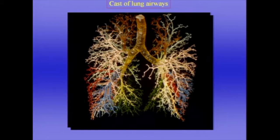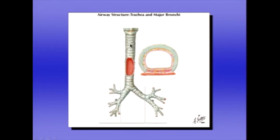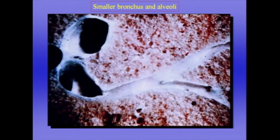Here's the trachea, or windpipe, and it's constructed of cartilaginous rings as you can see. The cartilaginous rings prevent the trachea from collapsing when the pressure outside it is greatly increased, for example during a cough. However the posterior part of the trachea is membranous in character and there is some invagination when the pressure outside is increased. Now we're further down into the lung — we can see the airway and its branches going out, and we're beginning to see the alveoli in what we call the parenchyma of the lung.